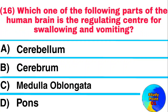Question: Which one of the following parts of the human brain is the regulating center for swallowing and vomiting? Answer: Medulla oblongata.